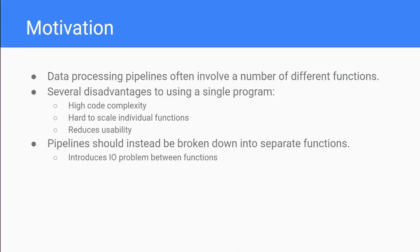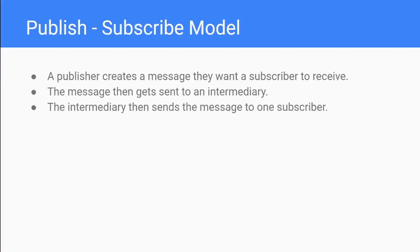Today we're going to talk about how we use Google PubSub to solve that problem. Google PubSub is built around the publish-subscribe model. The core idea is a publisher creates a message that they want a subscriber to receive. The message gets sent to an intermediary from the publisher, and then the intermediary sends that message to a subscriber. Whenever we're talking about publishers or subscribers we're talking about any sort of program or agent that's able to interact with Google PubSub.